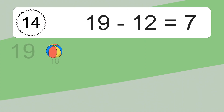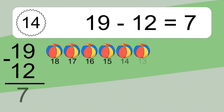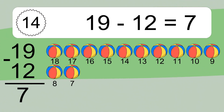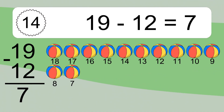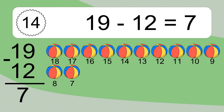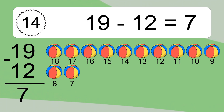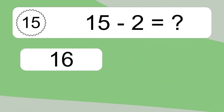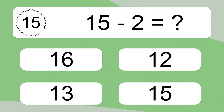19 minus 12 equals what? 19 minus 12 equals 7. Let's count it: 18, 17, 16, 15, 14, 13, 12, 11, 10, 9, 8, 7.